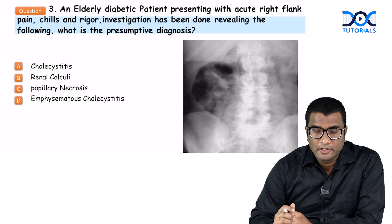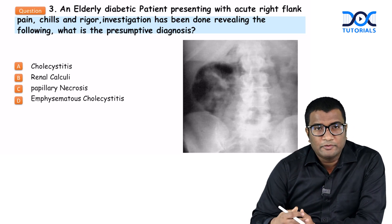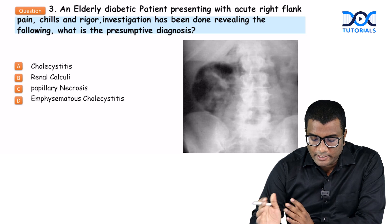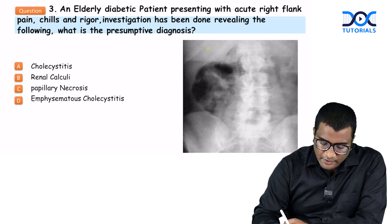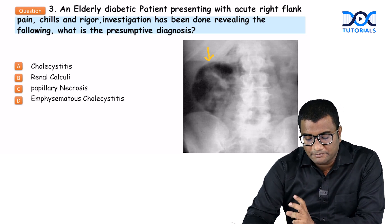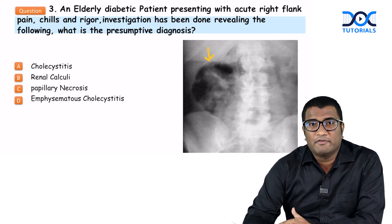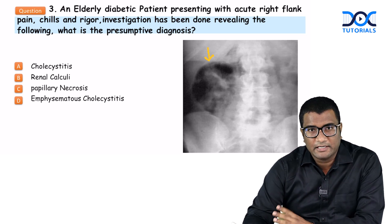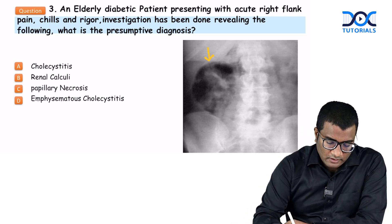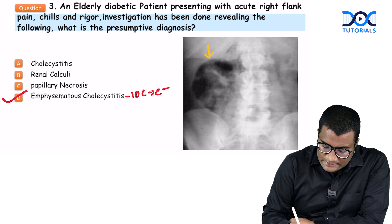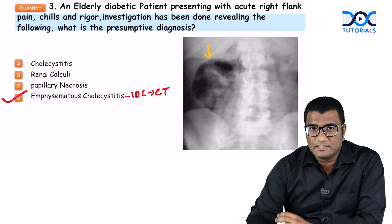Next question: an elderly diabetic patient presenting with acute right flank pain, chills, rigors, and fever. An abdominal radiograph is given. On the plain abdominal radiograph in the right lumbar region you see mottled air lucency — air pockets in the right flank region. This is suggestive of an air-producing infection in the kidney. The patient is diabetic with acute right flank pain, chills, rigors, and fever — all going in favor of emphysematous pyelonephritis. Remember, the investigation of choice is CT scan for air-containing infections.